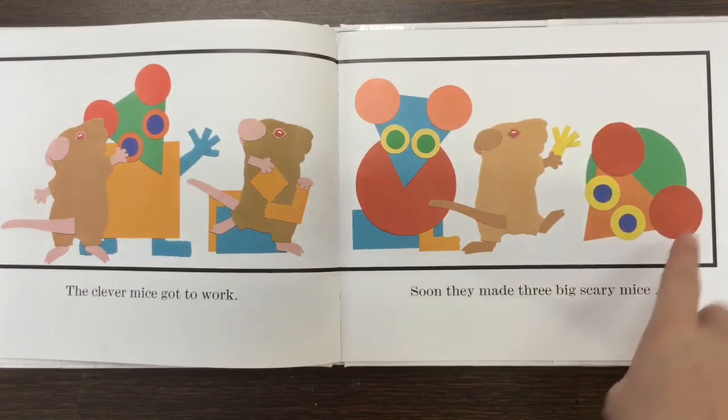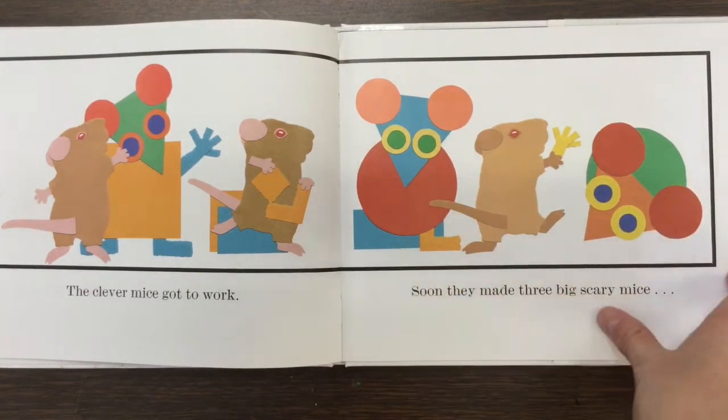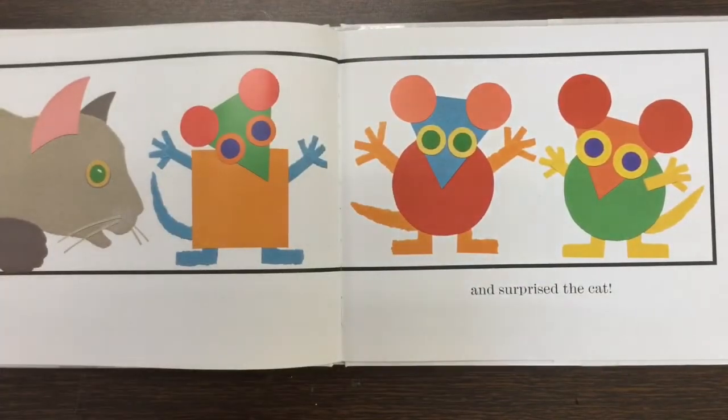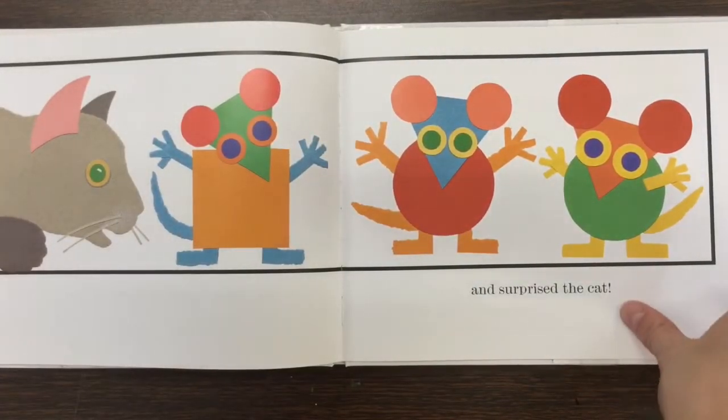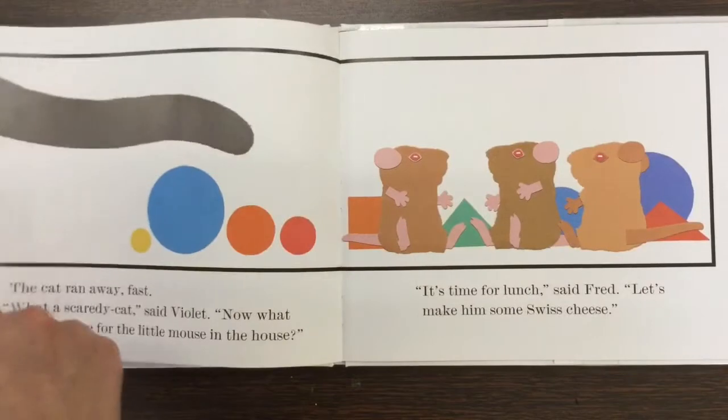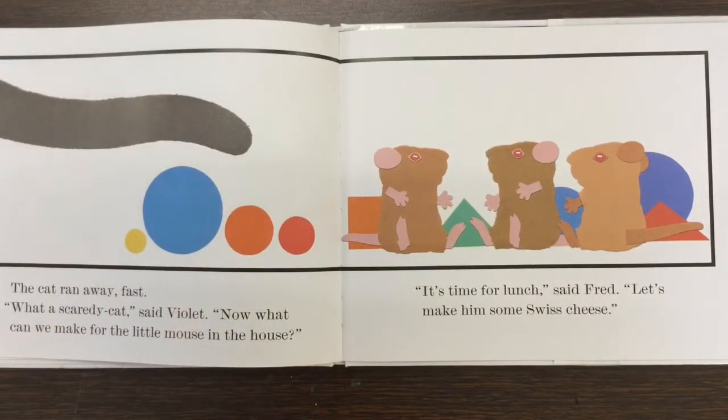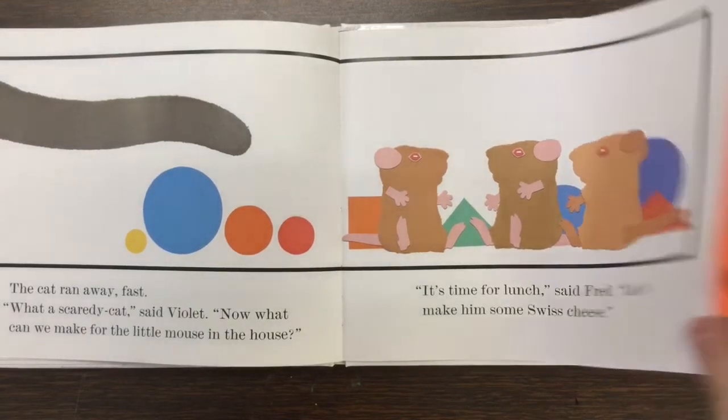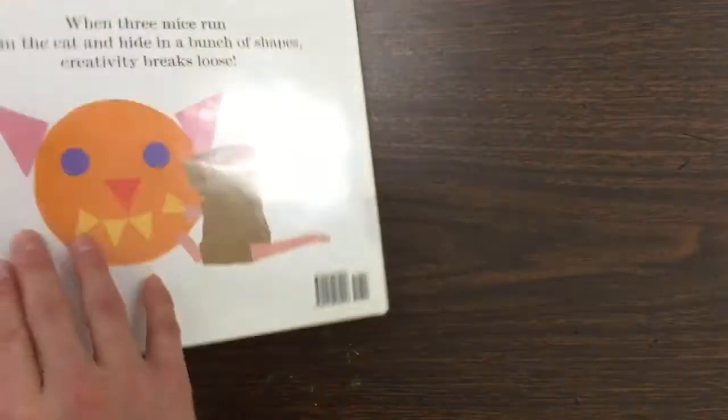What shapes are they using? Circles? Triangle? Rectangle? Square? And surprise the cat! The cat ran away fast. What a scaredy cat, said Violet. Now what can we make for the little mouse in the house? It's time for lunch, said Fred. Let's make him some Swiss cheese. So they did. The end.